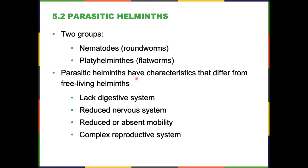Moving on to parasitic helminths — if you thought protozoans were gross, this is the stuff that really gives you the creeps because we're talking about worms. Nematodes are roundworms, platyhelminthes are flatworms. Many helminths just live their lives, but we care about the parasitic ones because of their major human impact. Parasitic helminths have characteristics that differ from free-living ones: they generally lack a complex digestive system, dependent on the host for digestion; they have a reduced nervous system; they don't often move much. But they have a very complex reproductive system with complex life cycles and succession of hosts.